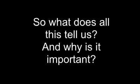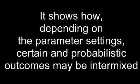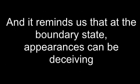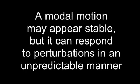So what does this tell us, really, and why is it important in a more general sense — what we see with two pendulums? Well, it tells us that the way a nonlinear system settles down can be complex, and that's an important thing to remember just at the outset. It also shows that depending on the parameter settings, certain and probabilistic outcomes may be intermixed. It reminds us that at the boundary state, appearances can be deceiving — the modal motion may appear stable, but it can respond to perturbations in an unpredictable manner.